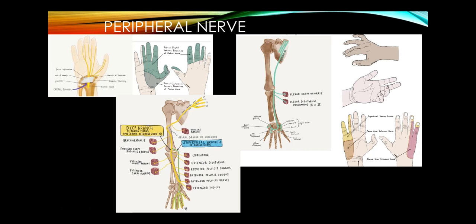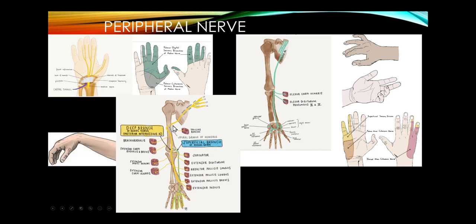Radial neuropathy: the classic story is alcohol or drug intoxication where the arm falls over the sofa and the patient wakes up with distal extensor weakness of the wrist and fingers. The injury is at the spiral groove. The nerve to the triceps comes off before the spiral groove, so elbow extension is preserved even though this is a radial muscle.